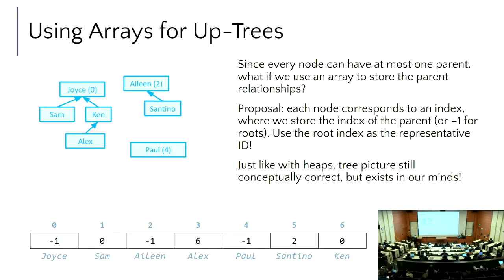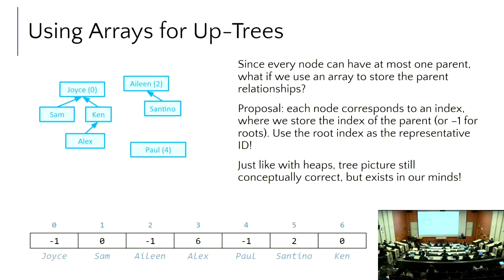Now instead of following pointers and traveling up through a tree, we're just jumping around different indices in the array — similar to how we used equations in the heap. We set aside the idea that whatever value Joyce is always lives at index zero, and Joyce's parent is always stored at index zero. If something happened and Joyce needed to be moved under another tree, we'd replace that negative one with whatever the new parent index is.